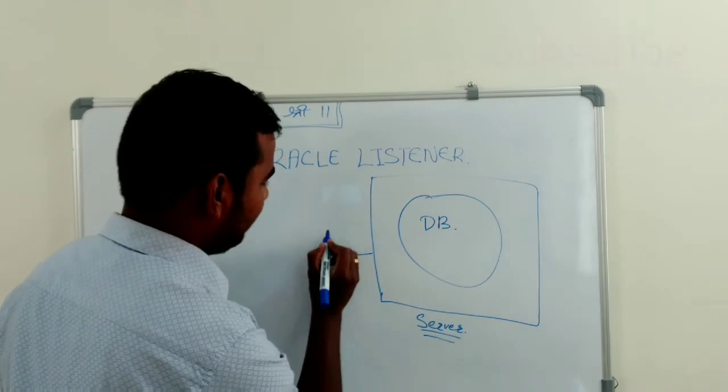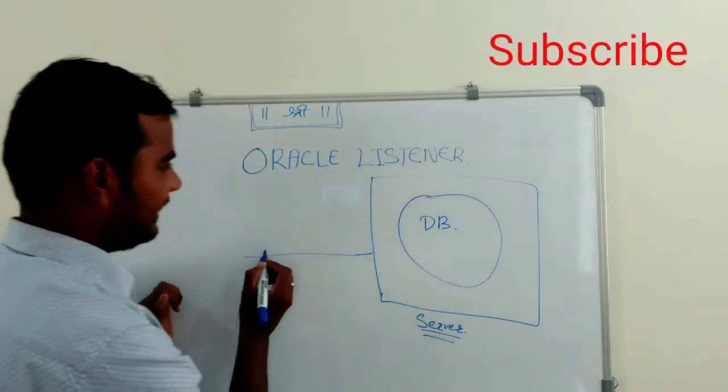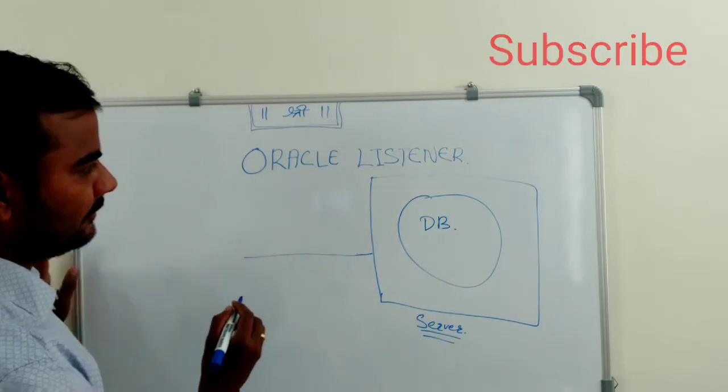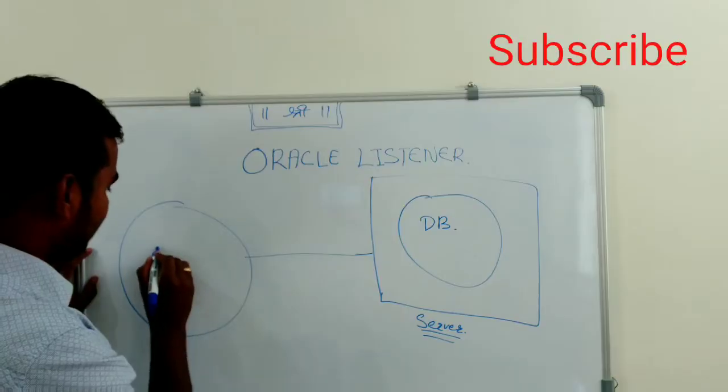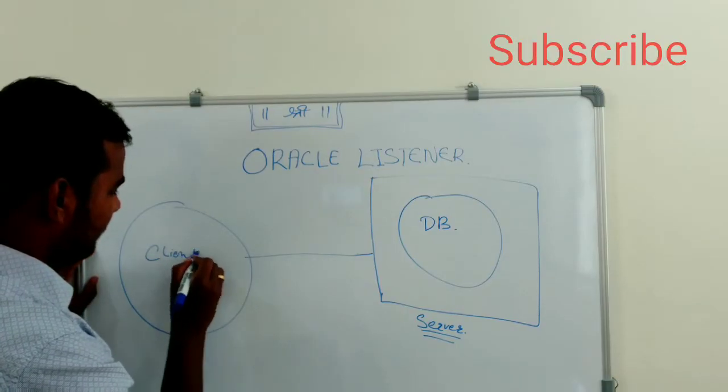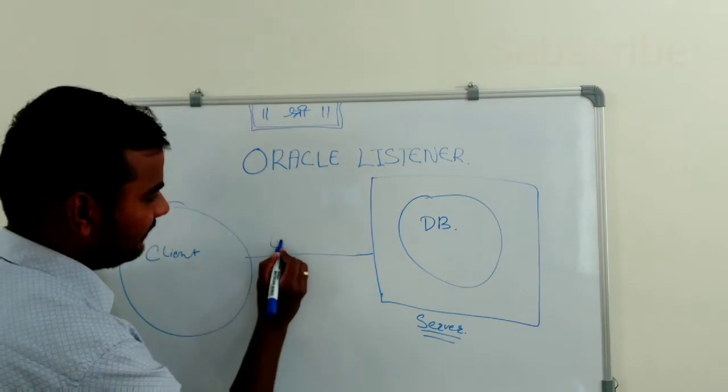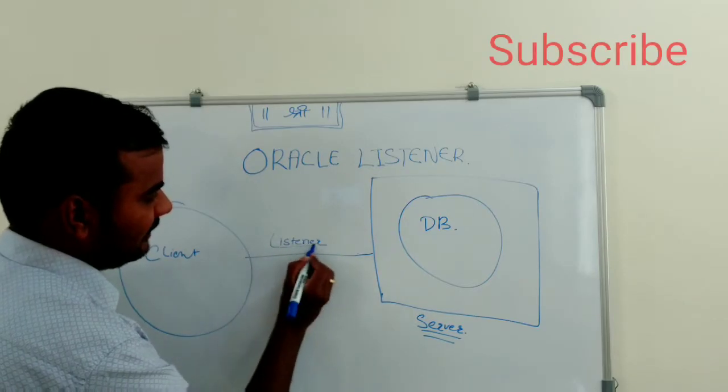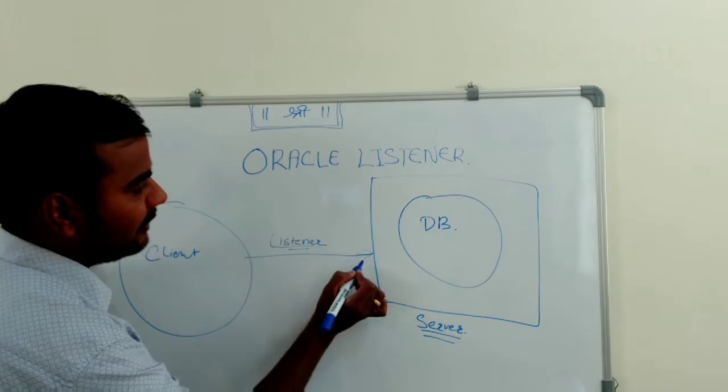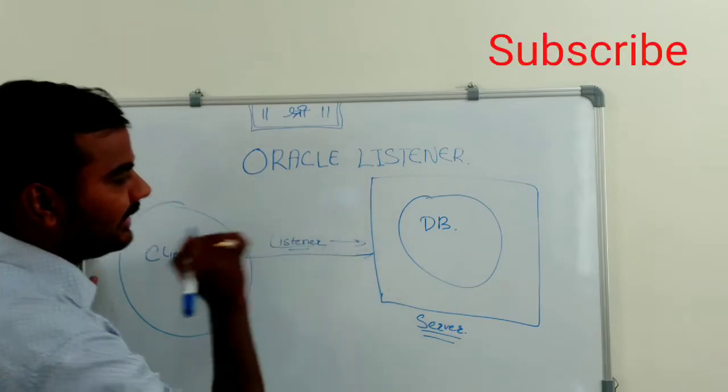So listener process is there which is taking the connection, and this is your client, and this is your listener. This listener is a part of your Oracle server, okay, so I am assuming like this.